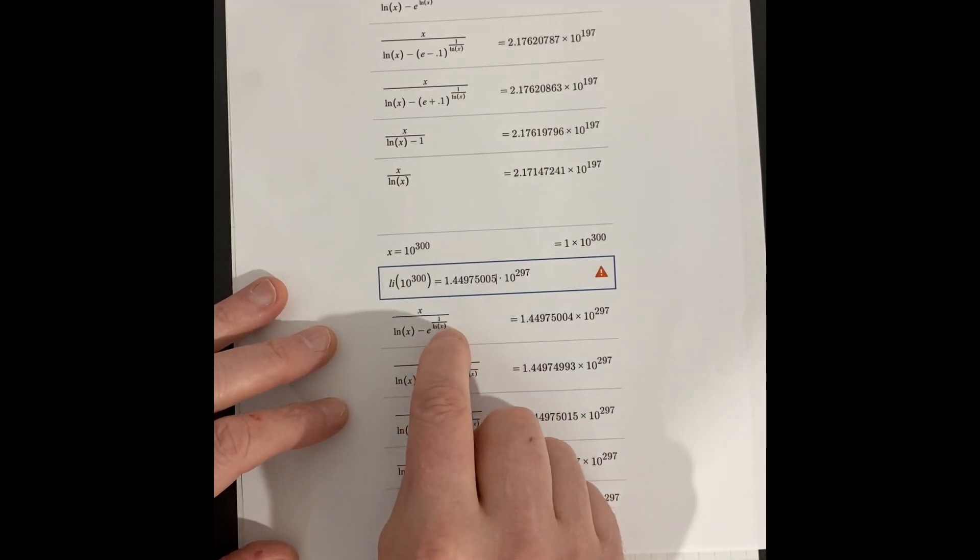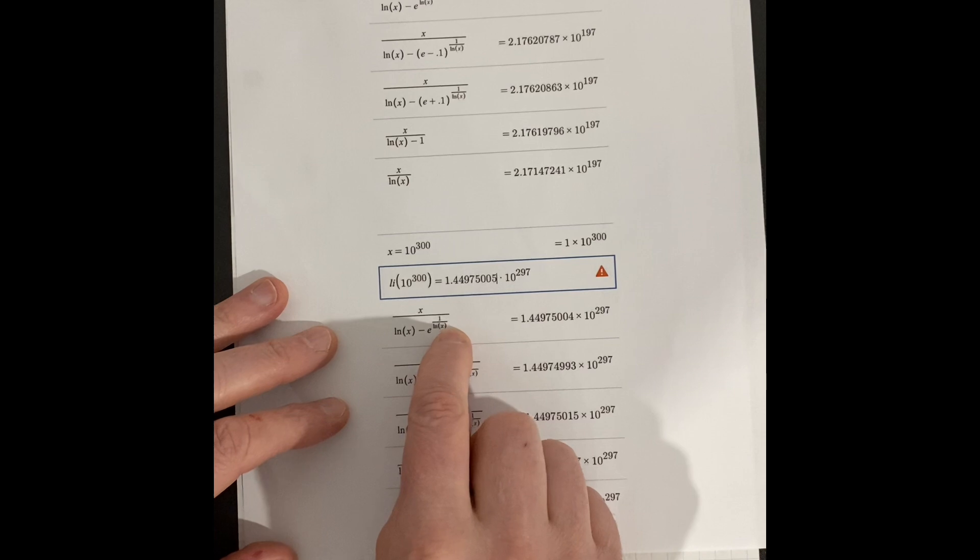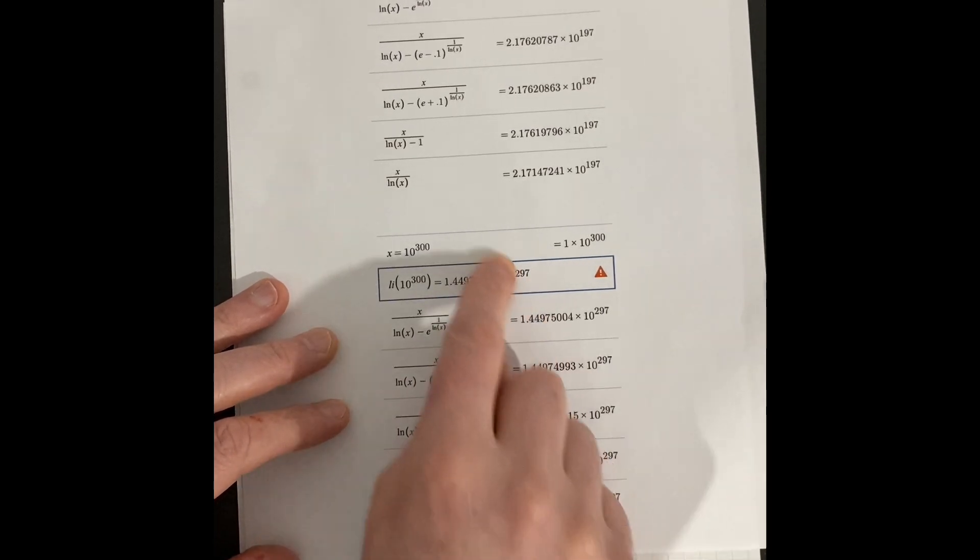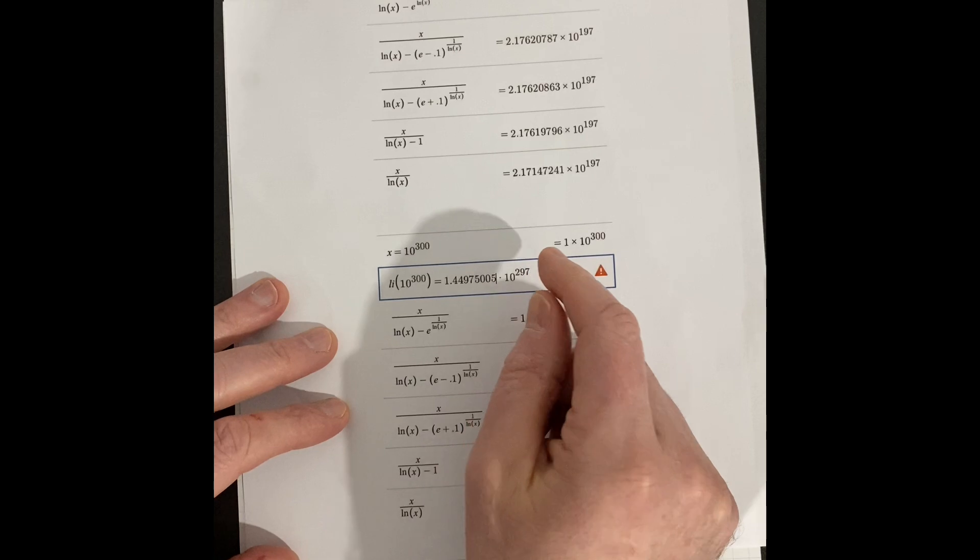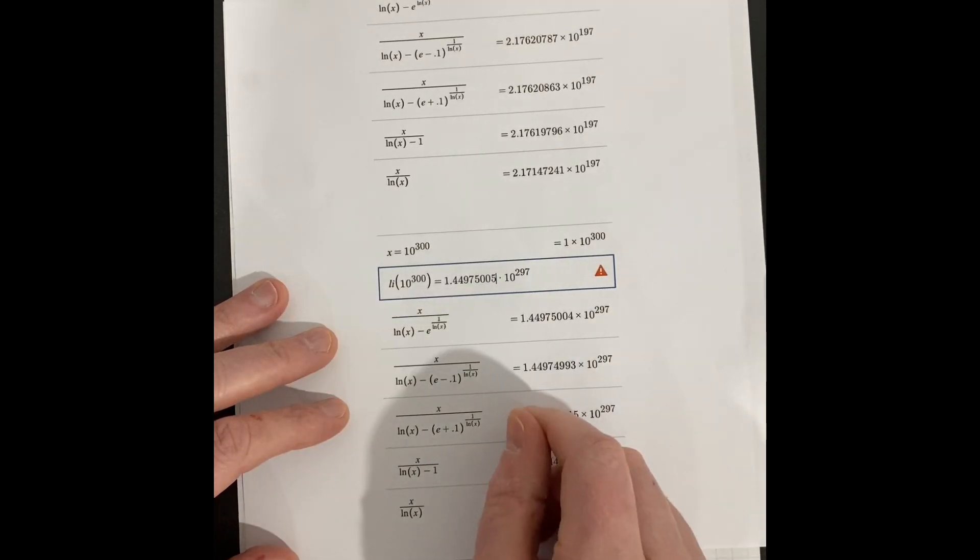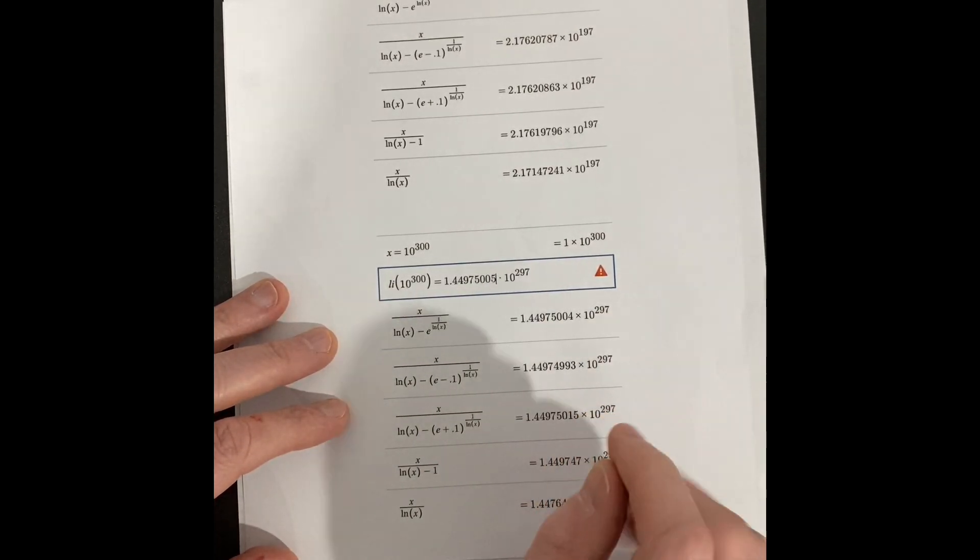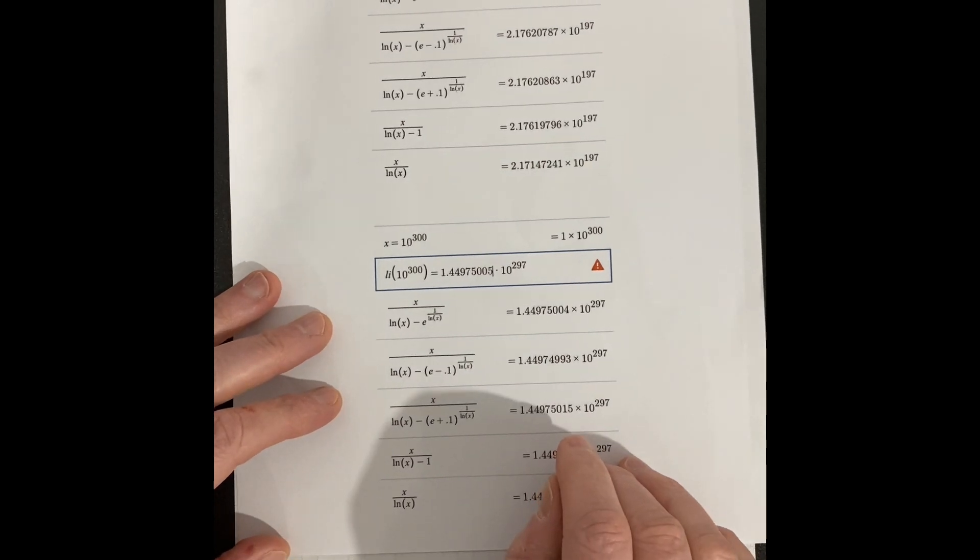Also an extra here, if you put minus 1, minus 2.5 right here next to the ln of X, it pretty much is equal after 10 to like 10 to the 100, I believe. Desmos doesn't even see the difference in them. I don't know what that means. I may have a clue to that later, but I'm not sure yet.